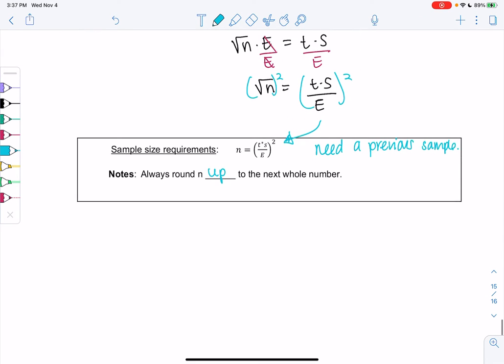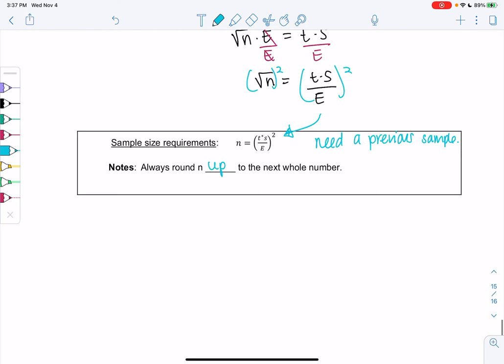Let's go ahead and plug into this formula to find the sample size needed to get that margin of error down to 0.25. We had T star was 2.586 and S is 4.0539. So T and S will always come from our previous sample.